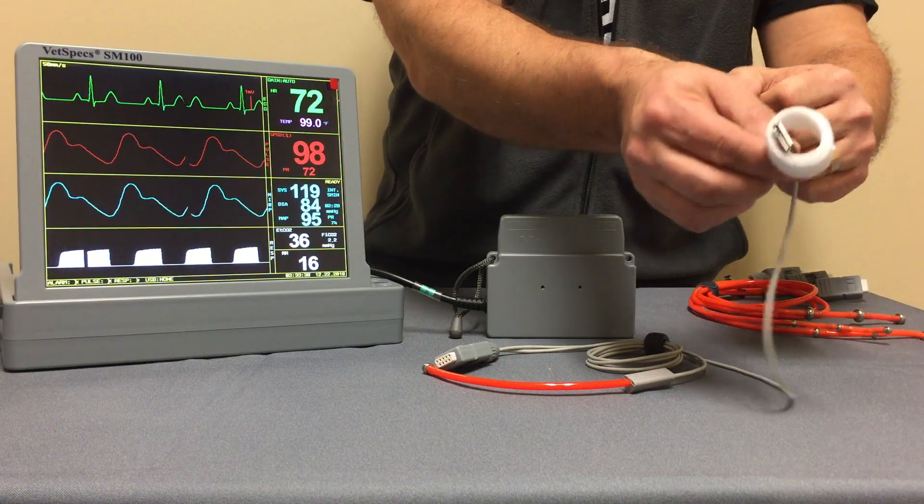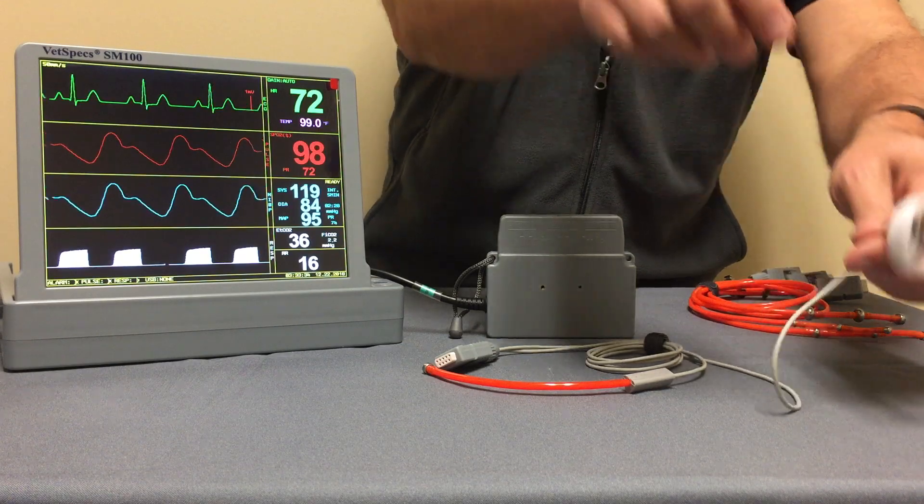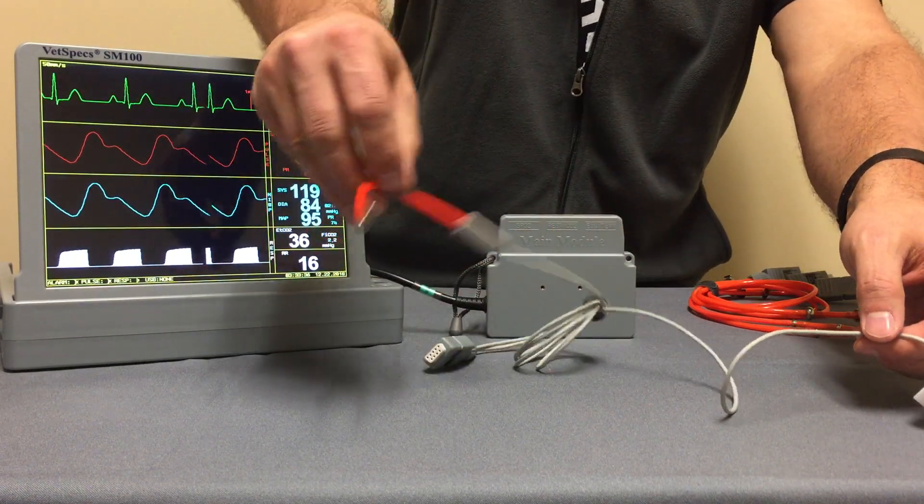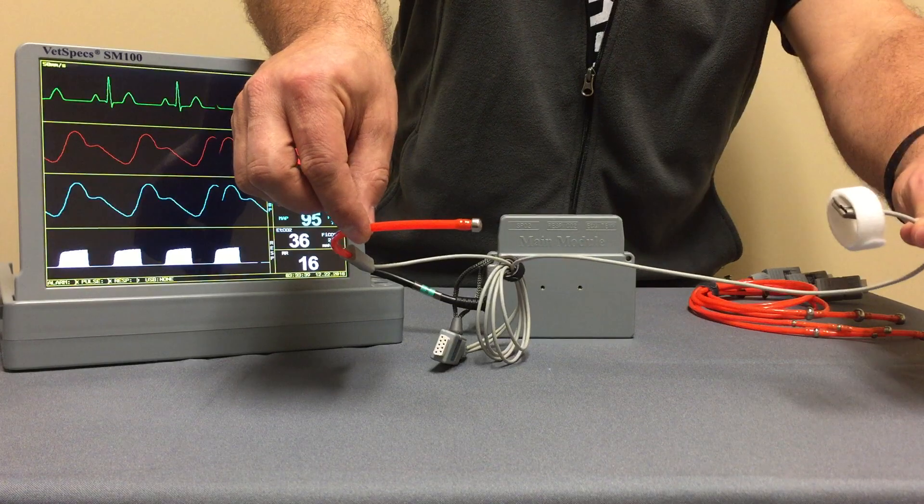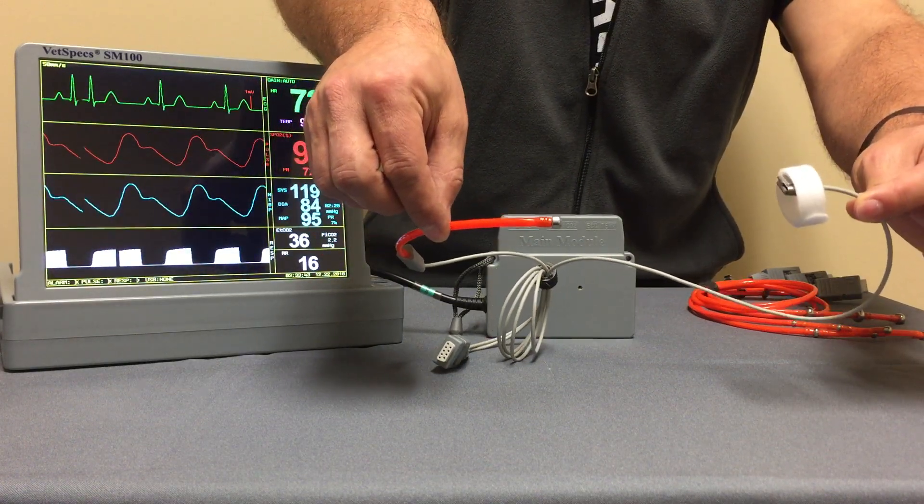Again, just apply that to the limb, strap the plate onto the limb, and then insert the rectal probe to the rear of the patient. So two simple connections, you're going to obtain that very important information.